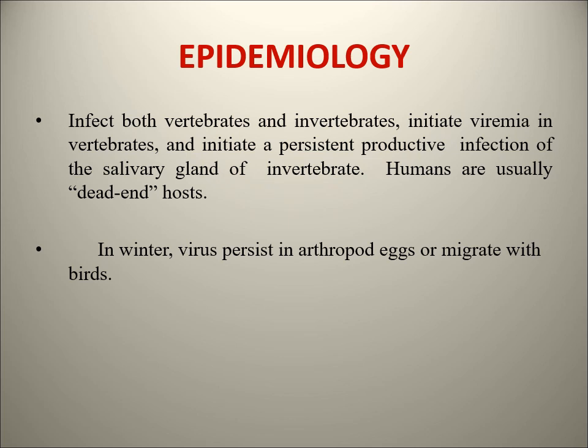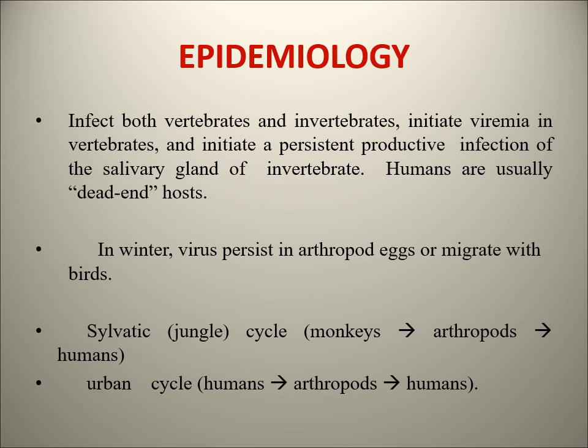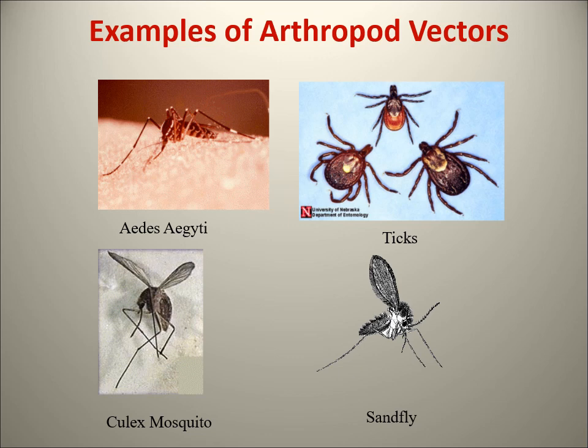Epidemiology: arboviruses infect both vertebrates and invertebrates, initiating viremia and causing persistent infection of the salivary glands of the arthropod vectors. In winter when the cycle is not active, the virus persists in arthropod eggs and migrates with birds. In the sylvatic cycle it is monkeys-arthropods-humans, and in the urban cycle it is human-arthropod-human. The two main transmission rules: one between arthropod and man (as in Dengue), and one between arthropod and animal with accidental human infection. Arthropod vectors include Aedes mosquitoes, ticks, and sandfly.